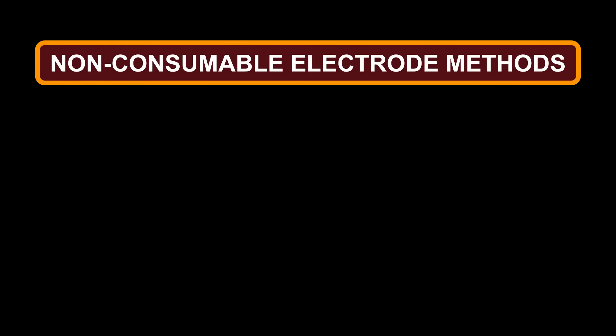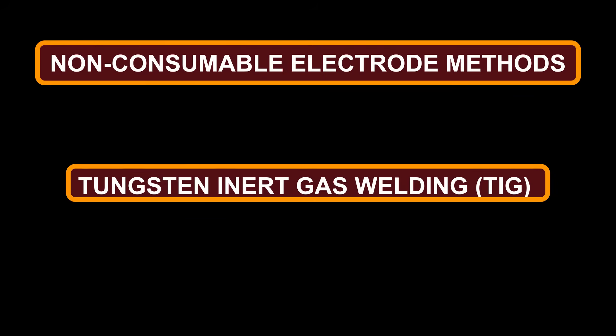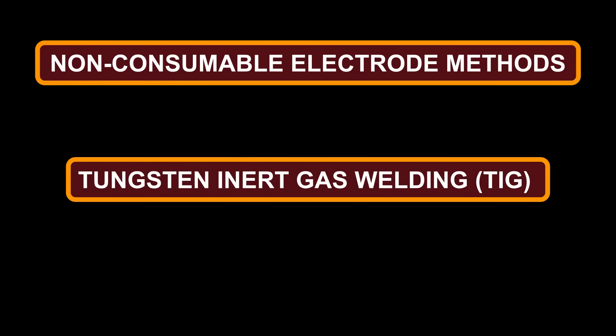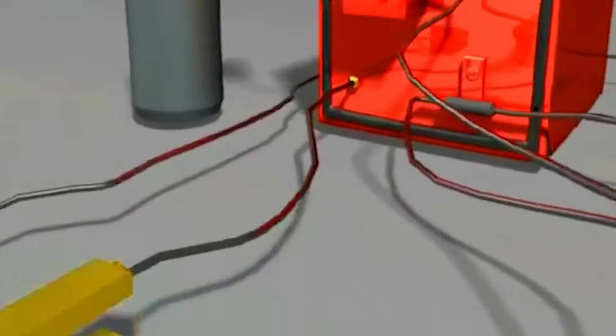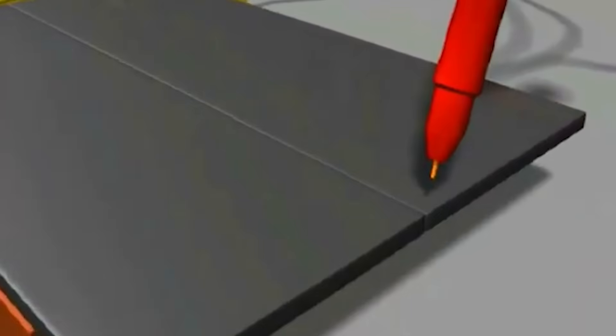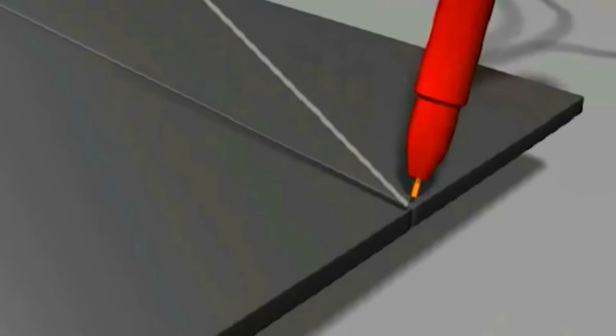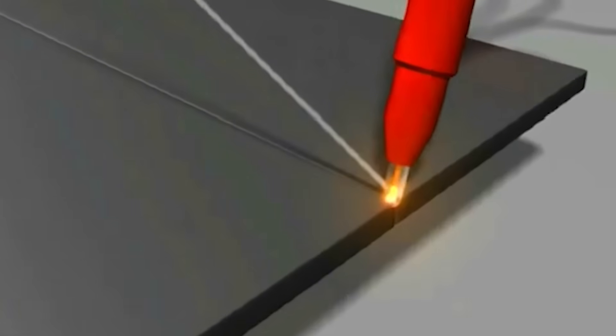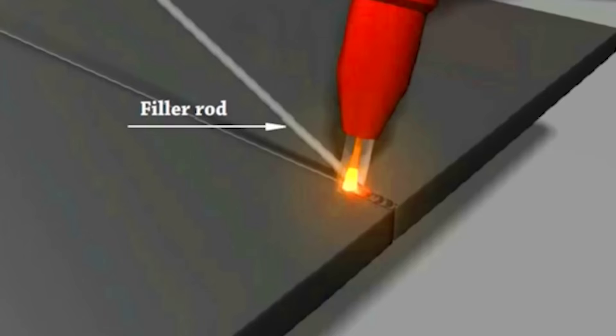Non-Consumable Electrode Methods. Tungsten Inert Gas Welding (TIG), also known as gas tungsten arc welding, uses a non-consumable tungsten electrode to create the arc and an inert shielding gas to protect the weld and molten pool against atmospheric contamination.